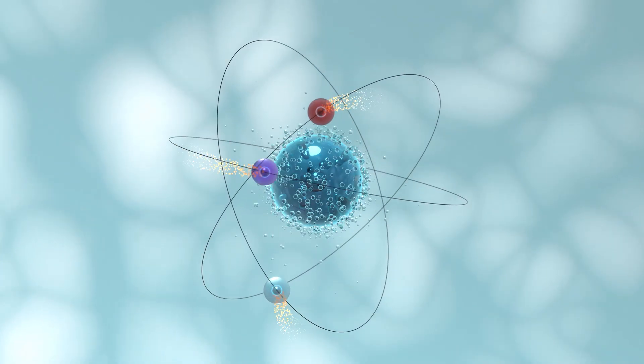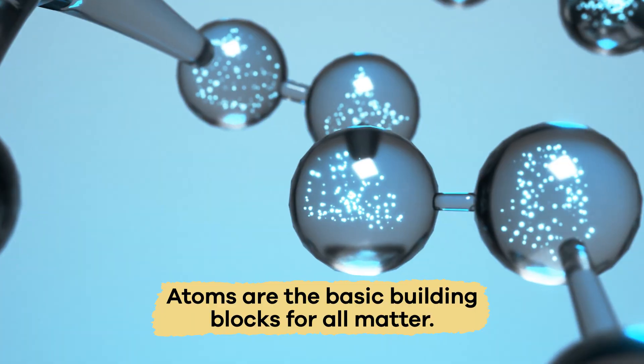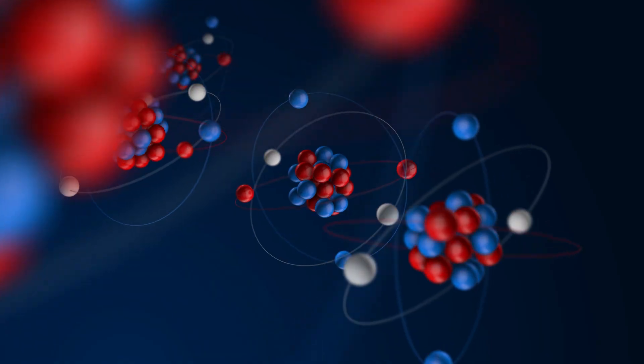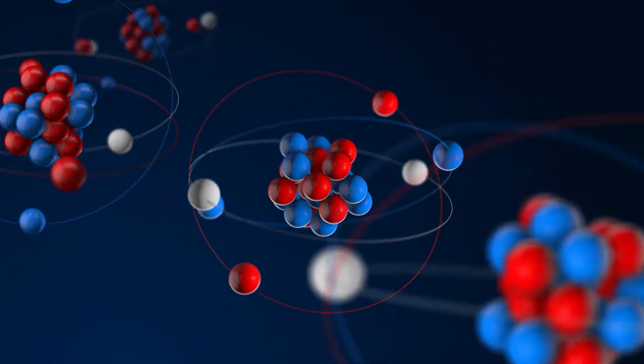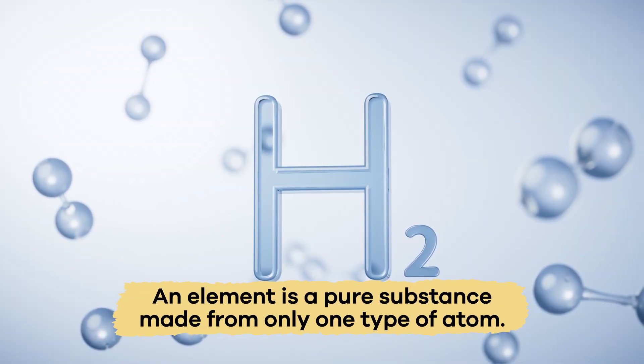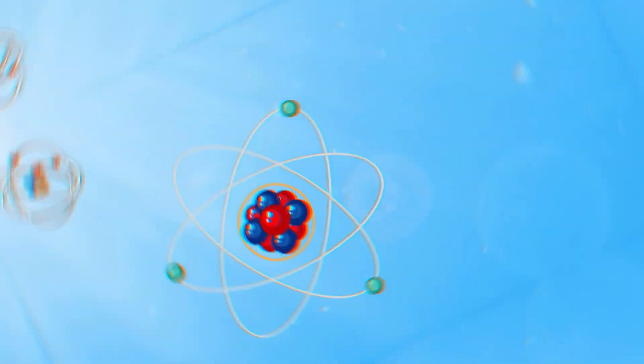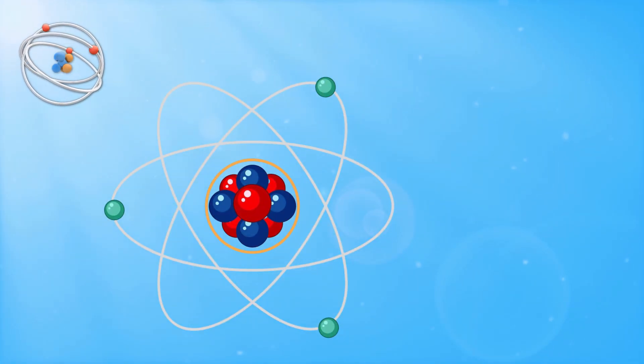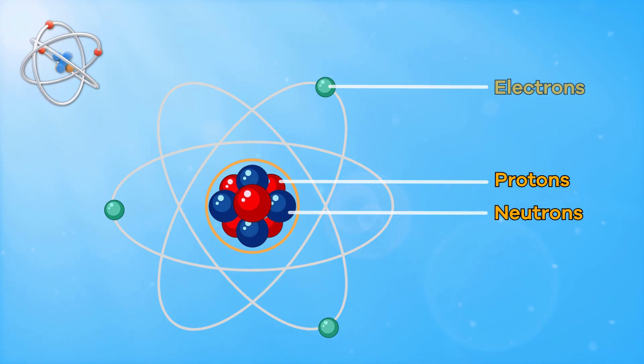Before we get into the details of how to read the periodic table, let's quickly review some atom and element related basics. Atoms are the building blocks of all matter in the universe and are the smallest particles in an element. An element is a pure substance made from only one type of atom. The structure of each atom and each element includes protons, neutrons, and electrons.